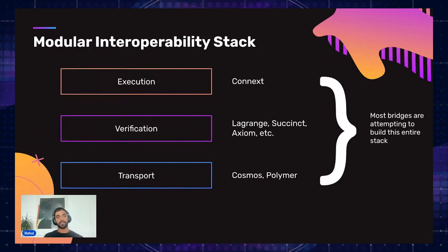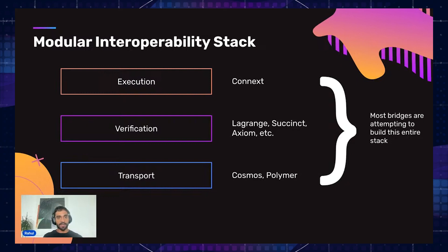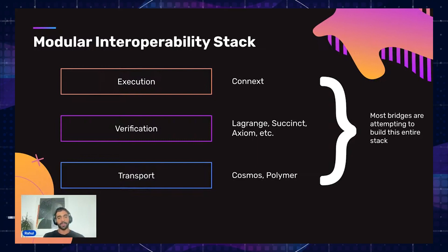At the transport layer, teams like Cosmos are doing all the work building base layer specifications around IBC. Polymer is a team we're in touch with that is building IBC everywhere — we want to let them focus on that problem and eventually build a client that plugs into it. Similarly, on the verification layer, there are really great teams that are laser-focused on solving this one problem. They're not trying to build full bridge functionality — they just want to build verification mechanisms that allow you to move things from one chain to another and prove them on the destination side.